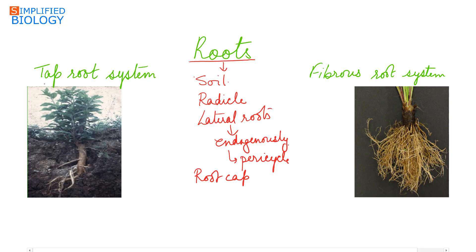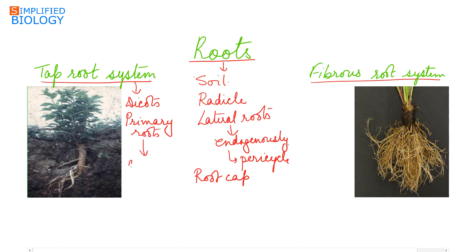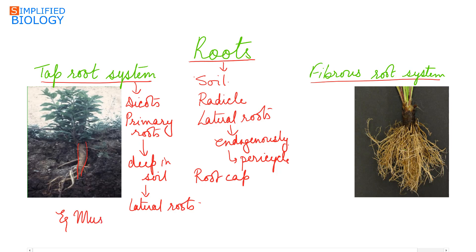The root cap protects the root tip as it moves deep into the soil between soil particles. Roots can be divided into two types: the tap root system and the fibrous root system. The tap root system is mainly seen in dicots. The primary root develops from the radicle, enters deep into the soil, swells up, and lateral roots develop from it. They are deep feeders. Example: mustard.